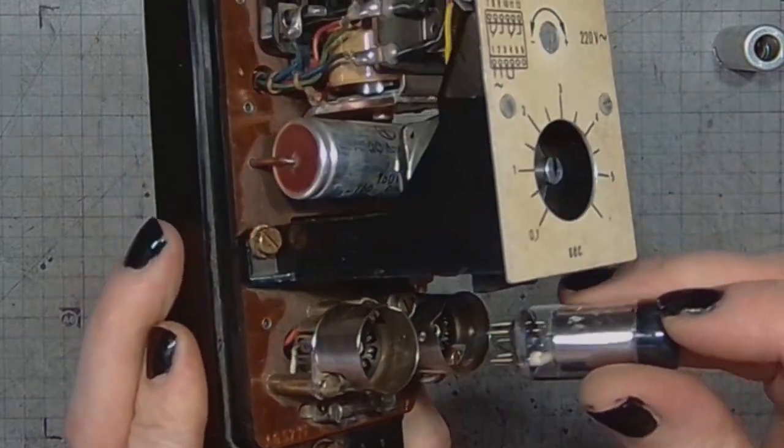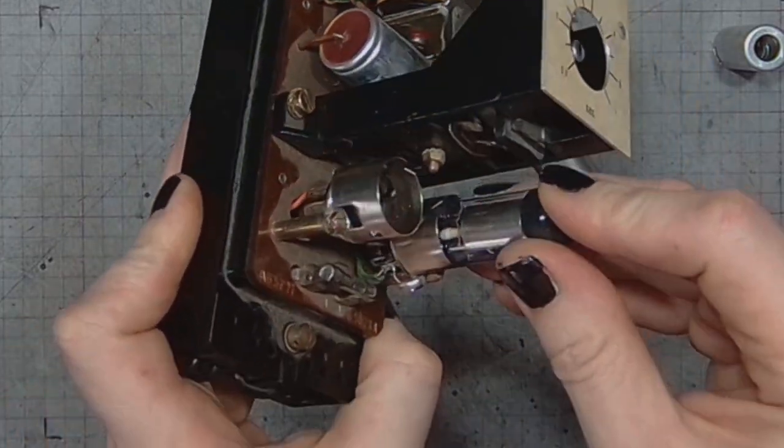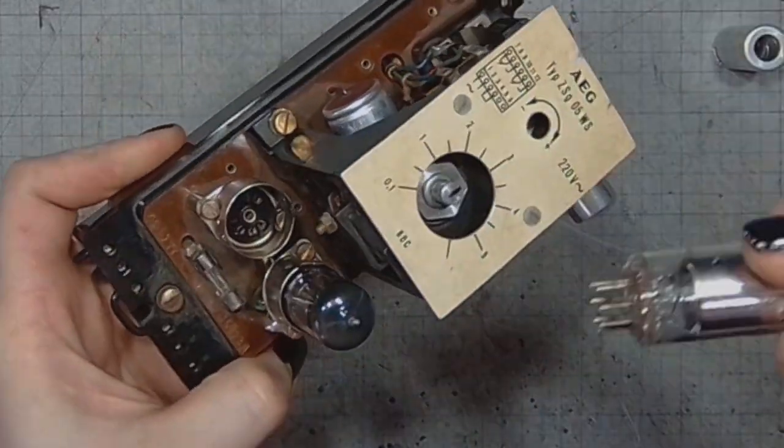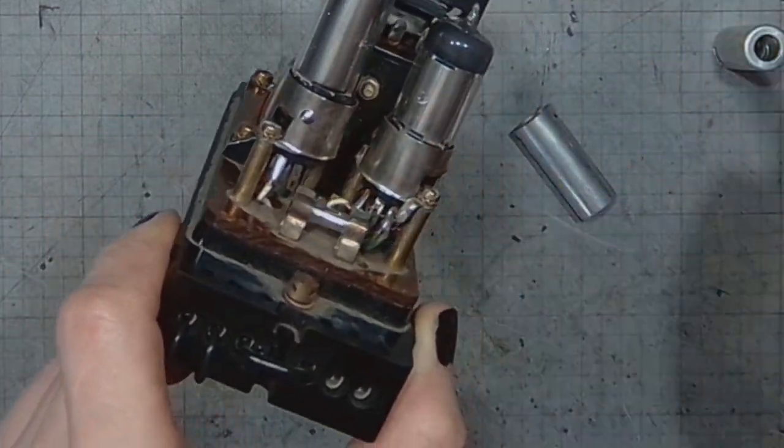So let's put those tubes back in place. They use heptal bases. There's also a 50mA fuse.